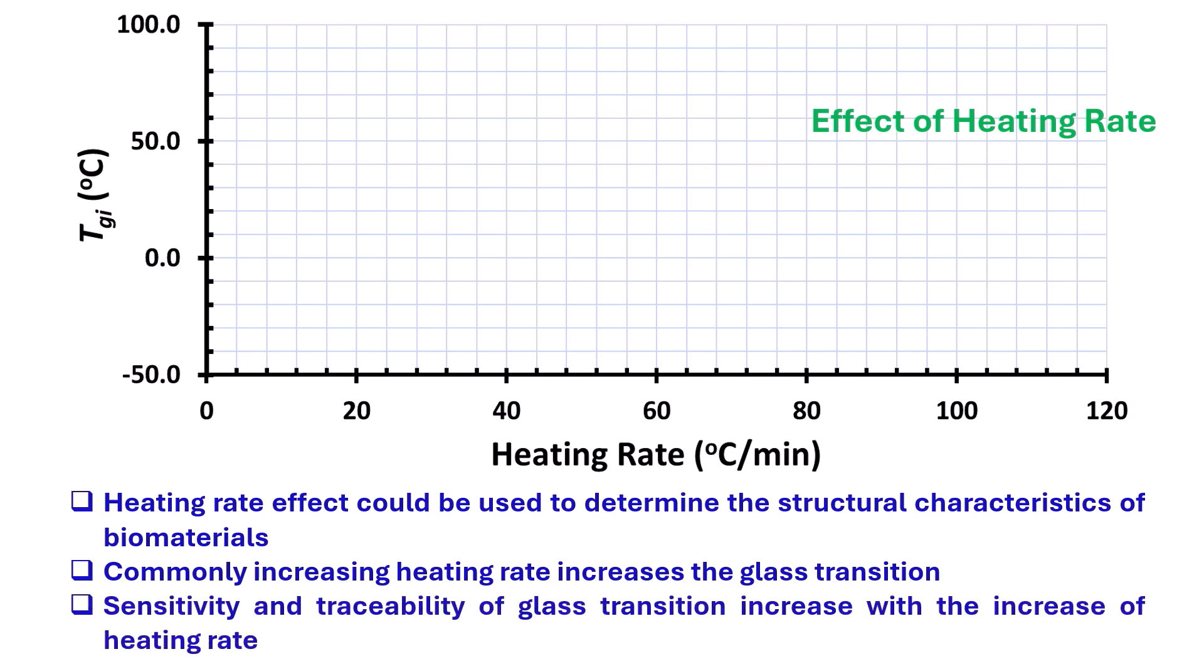Sensitivity and traceability of glass transition increase with the increase of heating rate. We could measure glass transition at different heating rate as shown. A curved line could be drawn. This line could be extended to zero heating rate and defined as Tg0.